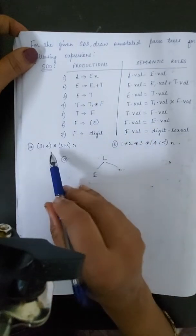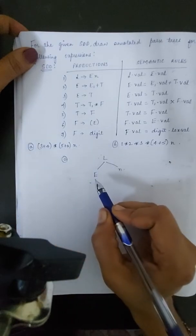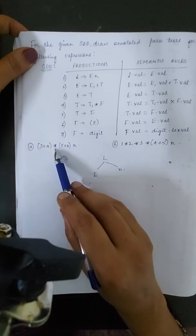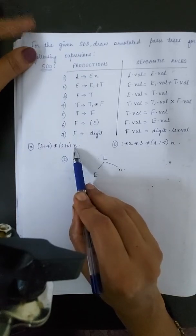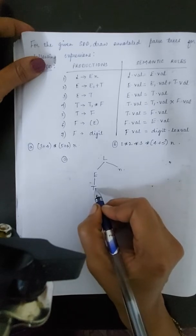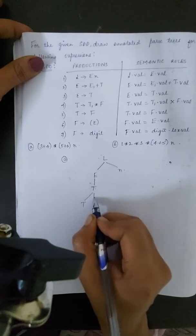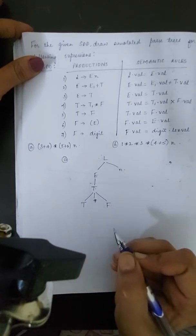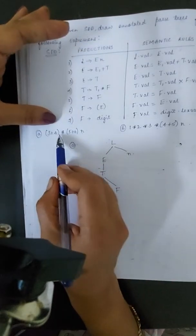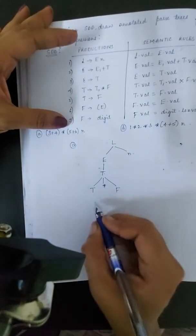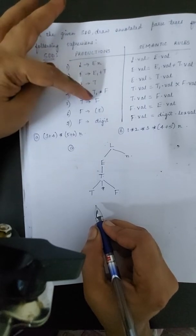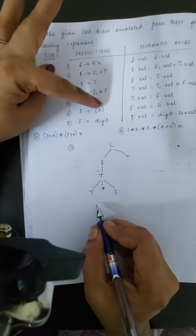Looking into the input string, we need to decide which production to apply. If I write E produces E plus T, I will not be able to get the next productions. So what I have to do is write E produces T, meaning E is replaced by T, and T in turn is replaced by T star F. Next, looking at this input string, we need to get the star and the rest of the expression.